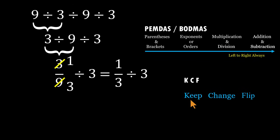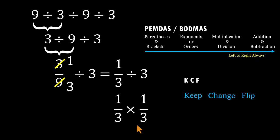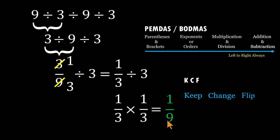Keep the first fraction, 1 third. Change division to multiplication. Flip the 3 into 1 third. Now we have 1 third times 1 third. Multiply across: 1 times 1 is 1, 3 times 3 is 9. The result is 1 over 9. And that's the correct answer.